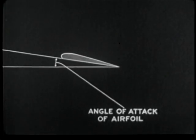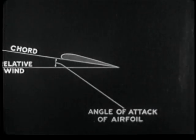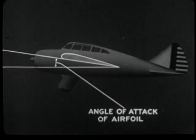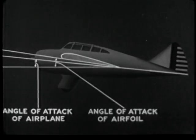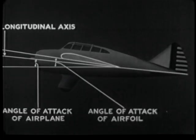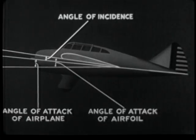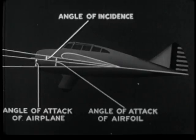The angle of attack of an airfoil is the acute angle between the chord of the airfoil and the relative wind. The angle of attack of the airplane as a whole is the acute angle between the longitudinal axis of the airplane and the relative wind. The difference between these two angles is constant for any given airplane and is called the angle of incidence.